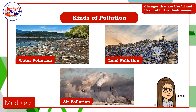The first one, as you can see in the picture, is water pollution. This is very dangerous — it is a human activity where people throw garbage directly or indirectly into our water. The second one is land pollution. In the picture, you can see tons of garbage, which is very harmful in our environment.